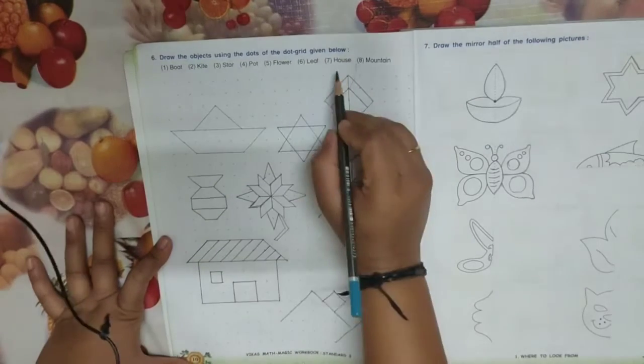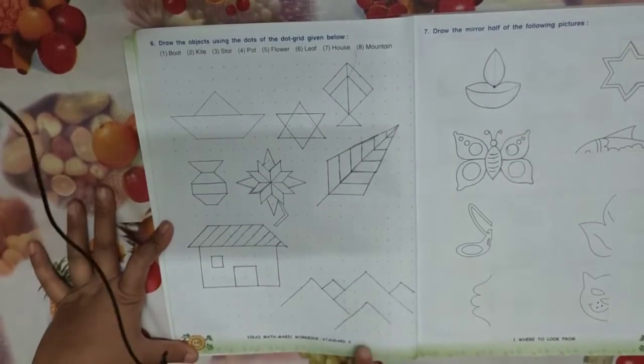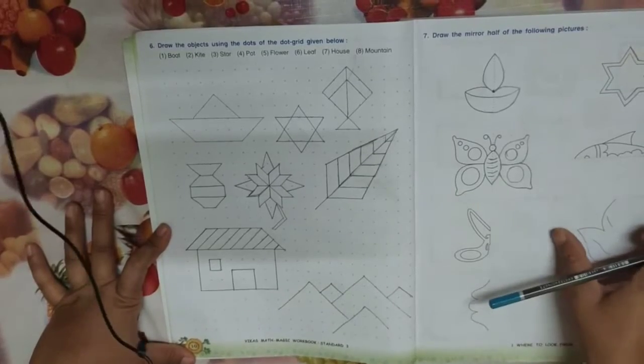Next one is house, seventh one. Now mountain, mountain also there. Now see the next question.